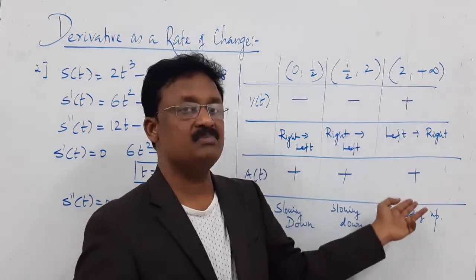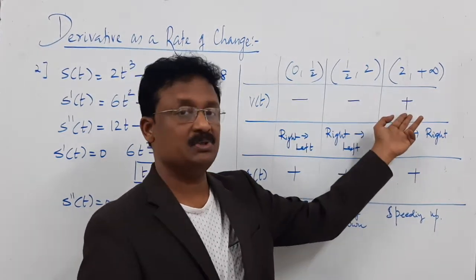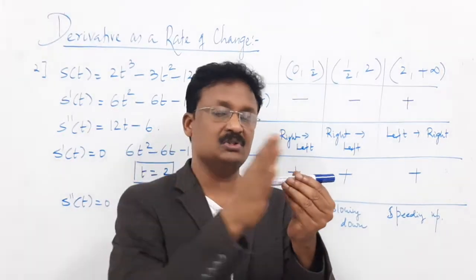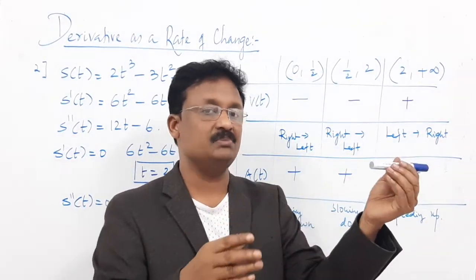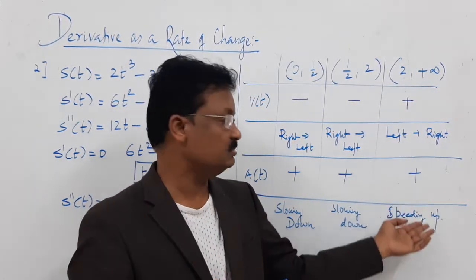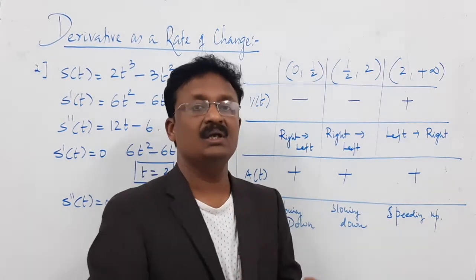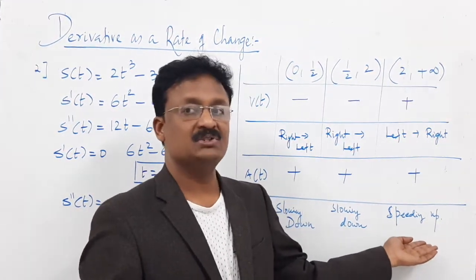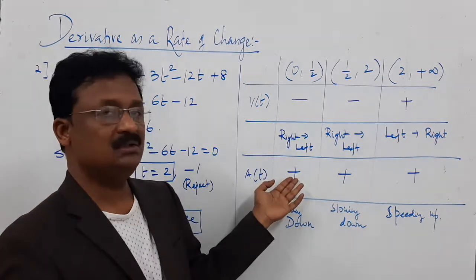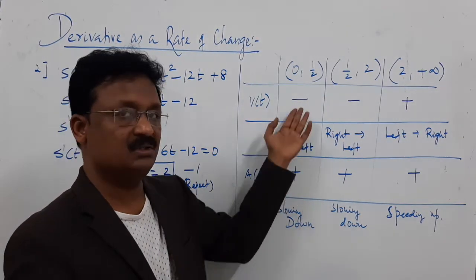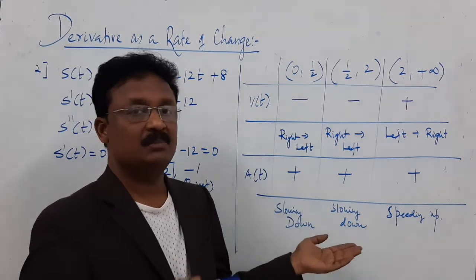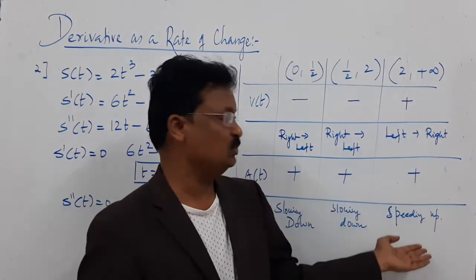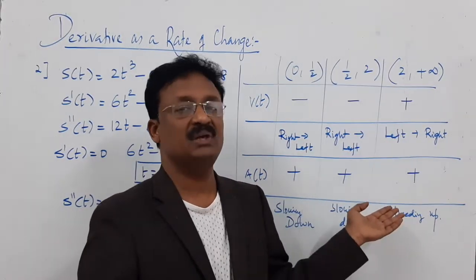To summarize: if velocity and acceleration have the same sign, the particle is speeding up. If velocity and acceleration have different signs (e.g., negative velocity with positive acceleration), the particle is slowing down.